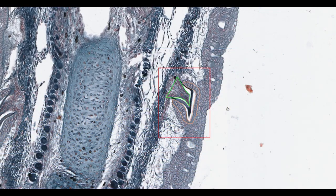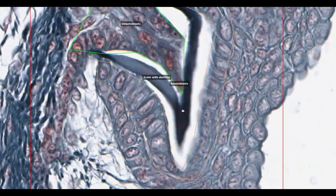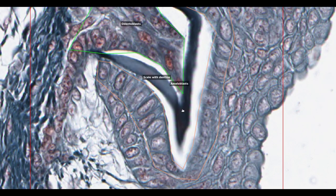Switching back to slide 249, we can see the next stage of development. Here the odontoblasts have secreted this solid black material which is dentin. This will become calcified forming bone.